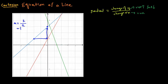Meaning it is changing one unit of the y-axis compared to one unit on the x-axis. Now let's take a look at the red line over here. We can again take any two points. We can see it is running forward one unit of x and it is rising by two units of y. That means two divided by one, so the slope or gradient of the line is two.